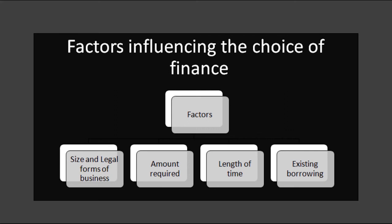Size and legal form. Companies, especially public limited companies, have a greater choice of sources of finance. Issuing shares or debentures is not an option for sole traders and partnerships. These businesses, if they have plans to expand, may have to depend on the savings of their owners — personal capital. They also often have the disadvantage of paying higher interest rates to banks for loans than large and well-established companies.